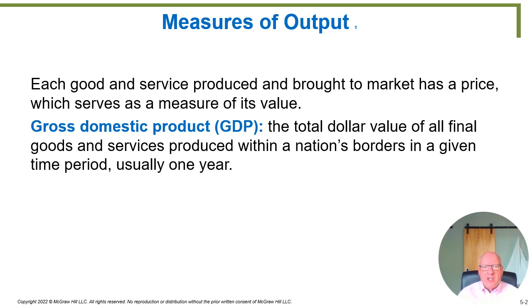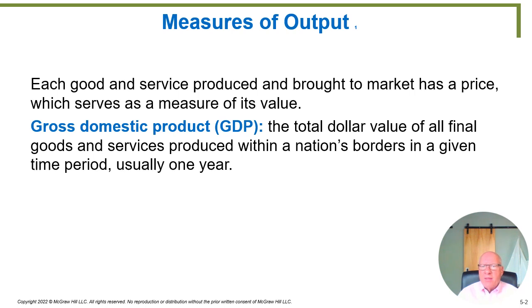That mechanism is called gross domestic product, usually abbreviated as GDP. The gross domestic product is the total dollar value of all final goods and services produced within a nation's borders in a given time period, usually a year. So we take all the goods and services produced, add them up by their total dollar values, and say that's what your economy produced this year.